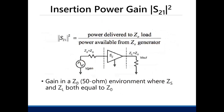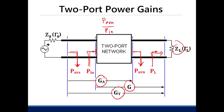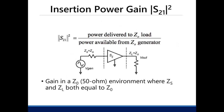First is the insertion power gain. The insertion power gain is equal to the magnitude of S21 squared. This is your insertion gain — the power inserted into the network versus the power available from the source. It assumes that your transistor is terminated at Z_0: both input and output are terminated by the characteristic impedance. This is the gain you'll get when you terminate it like that.